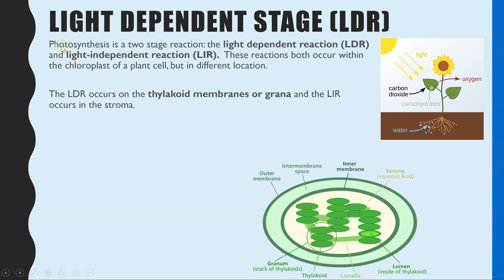The light dependent reaction is one of two stages in photosynthesis. It begins with the light dependent reaction and then you have the light independent reaction. Both occur in the chloroplast but in different locations, and you do need to know those for the exam — it could be a short one mark question. The light dependent reactions occur in the thylakoid membranes, also referred to as the grana (plural) or granum (singular), which are stacks of membranes.